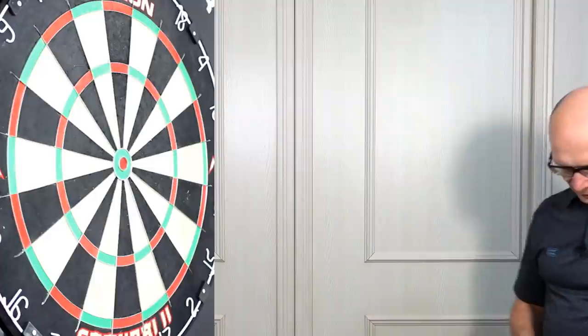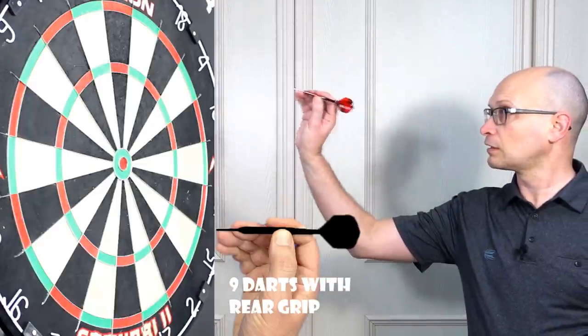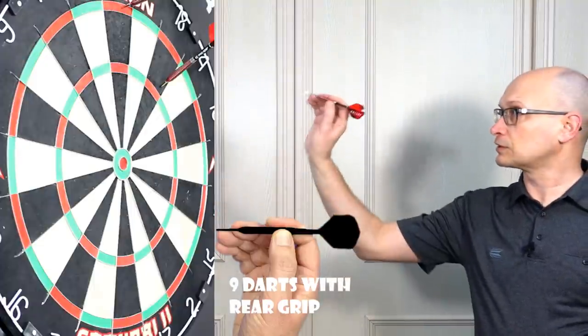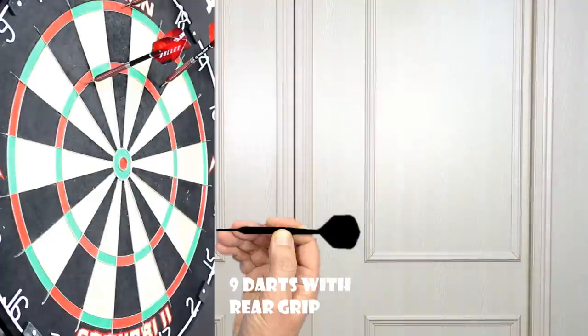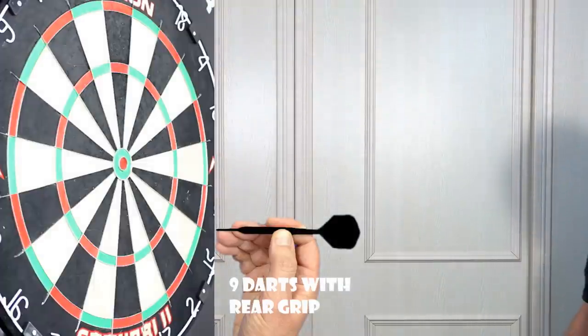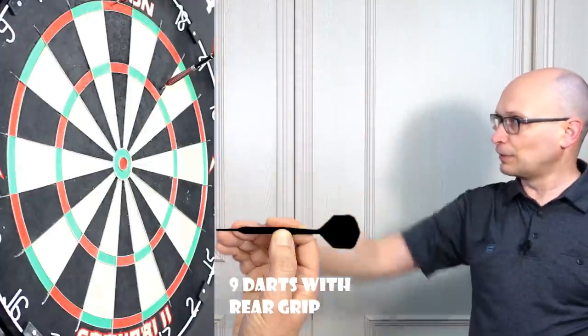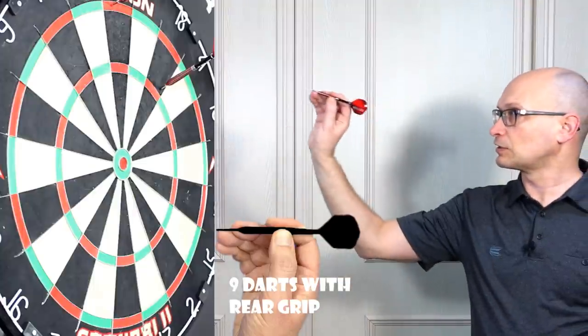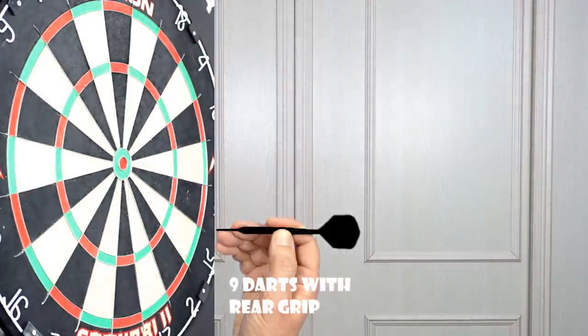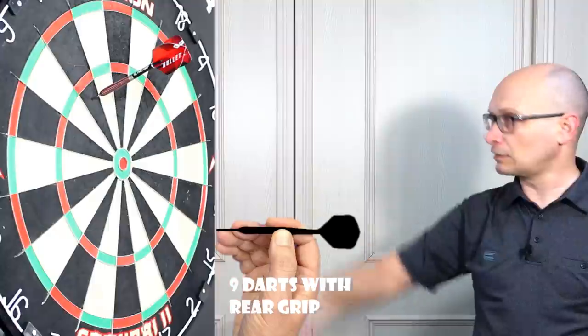The rear section obviously tapers and gets quite thin. I'm not going right to the end, I'm going to stay on the grip. Obviously it feels more front heavy because of the taper. If you're a rear gripper and you already like this style, then you probably know that feeling. But if you've never tried it before, you may want to go to the lighter dart because it may surprise you. It feels more front heavy than what your normal 25 gram would feel.